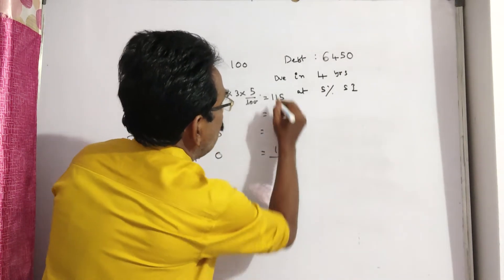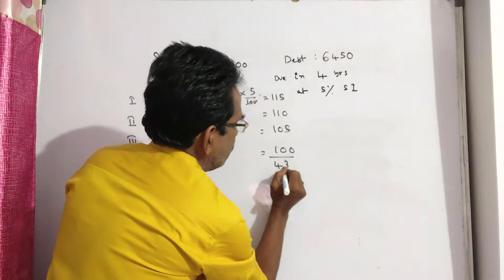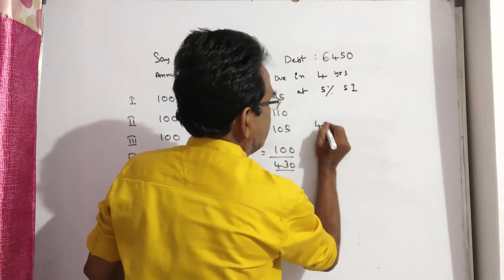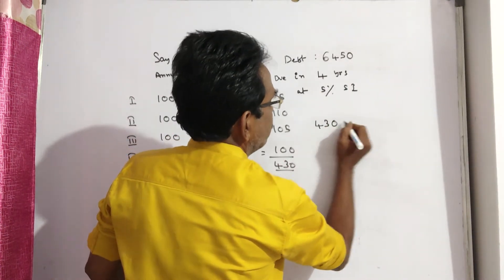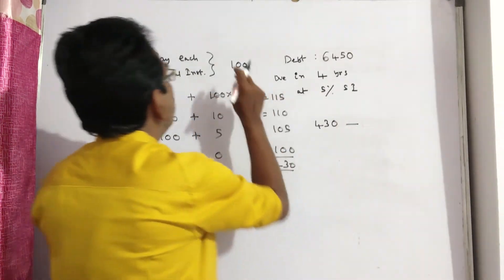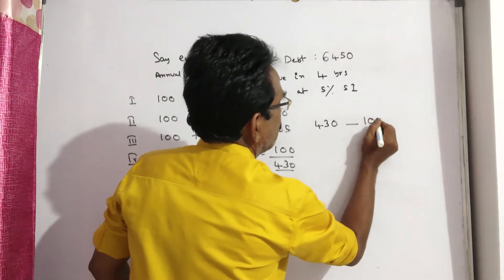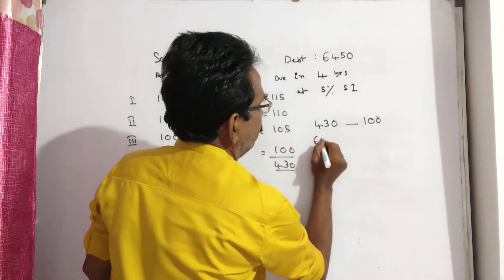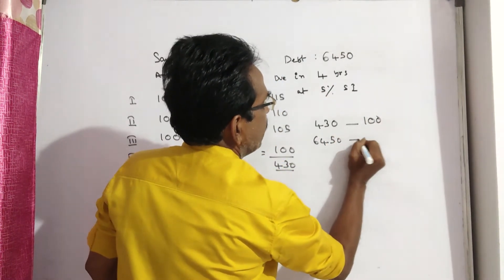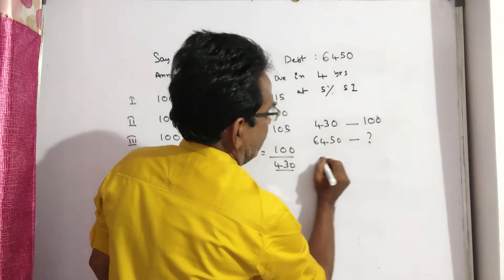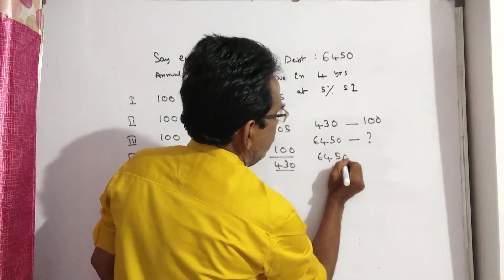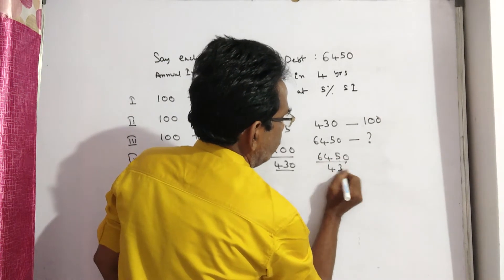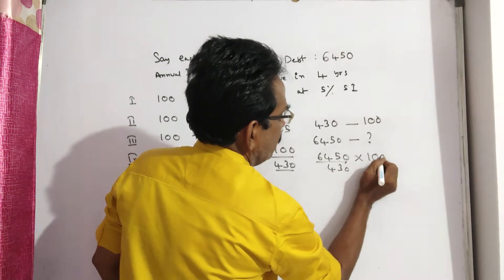The total amount is Rs. 430. Friends, if the total amount is Rs. 430 when the installment is Rs. 100, then if the total amount is Rs. 6450, the installment is 6450 divided by 430, multiplied by 100.